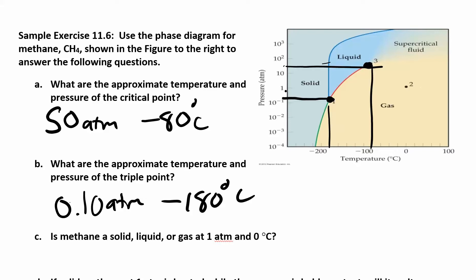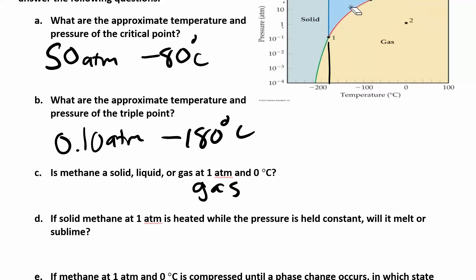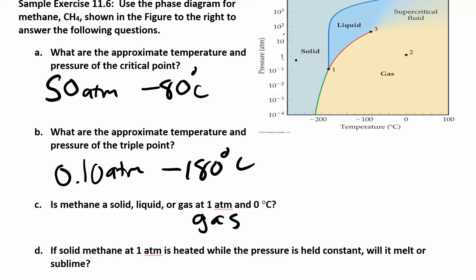Next: if solid methane at 1 ATM is heated while pressure stays constant — so you're increasing the temperature — will it melt or will it sublime? Starting at solid, 1 ATM, and increasing the temperature, which line do you cross first? Do you cross over to liquid or to gas first? You cross over to liquid first. So that's melting — going from a solid to a liquid.